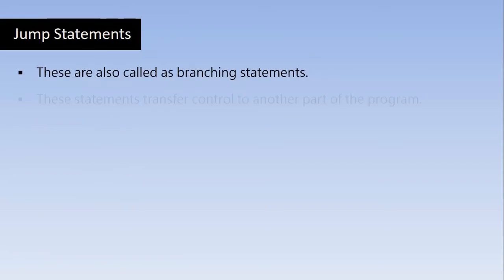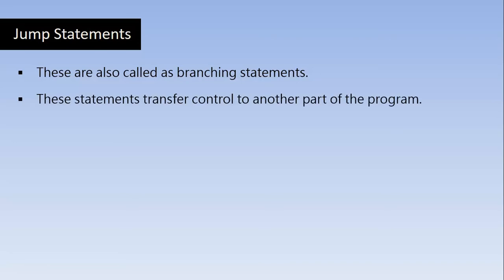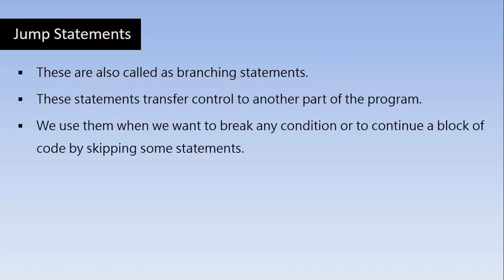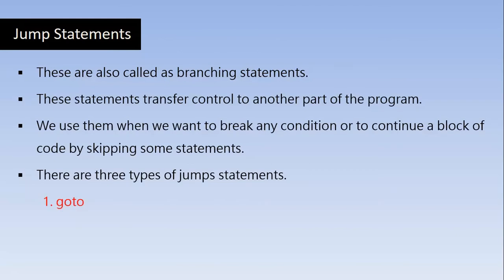Jump Statements are also called Branching Statements in C language. These statements transfer control to another part of the program. We place these Jump Statements in a particular block of code. When the control encounters the Jump Statement, the control transfers to some other part of the program. We use them when we want to break any condition or to continue a block of code by skipping some statements. There are three types of Jump Statements: GoTo, Break, and Continue. All three of these are keywords you have to use as they are.